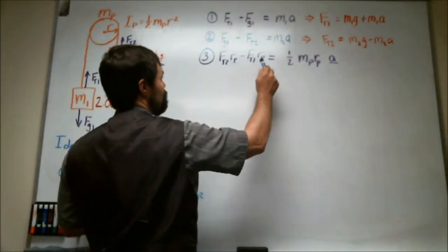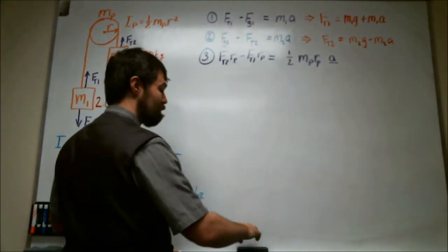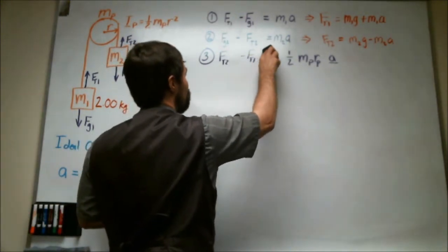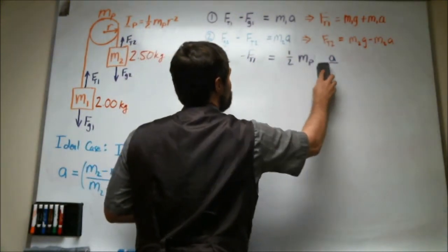So at this point it's advisable to divide everything in this equation by the radius of the pulley. The reason is because it appears in every single term. So if I divide both sides by radius of the pulley, this is what I'm basically left with.